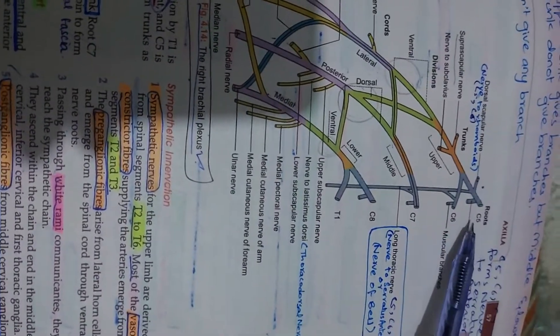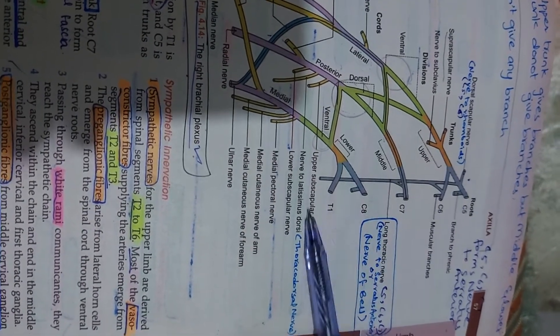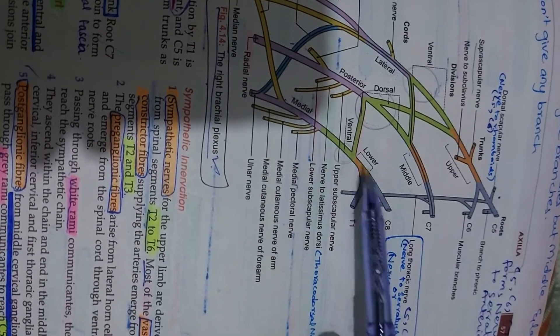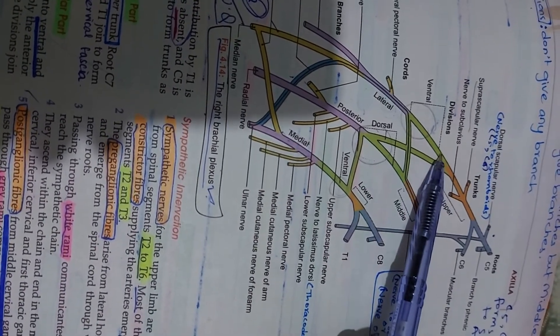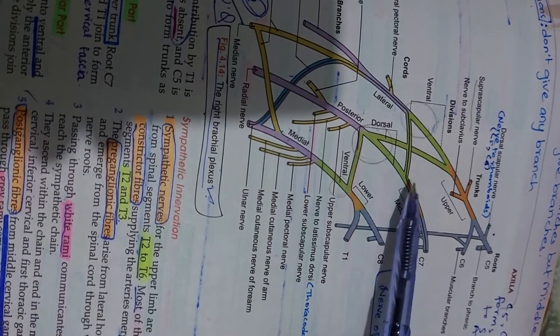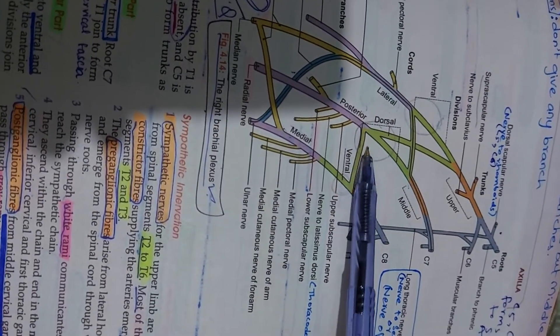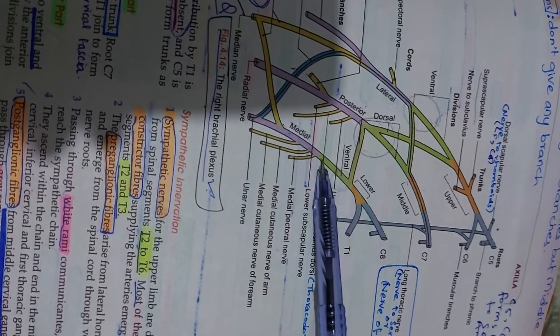The roots of the brachial plexus are C5, C6, C7, C8, and T1. C5 and C6 form the upper trunk. C7 alone continues as the middle trunk. C8 and T1 form the lower trunk. From these trunks, anterior and posterior divisions form the cords.